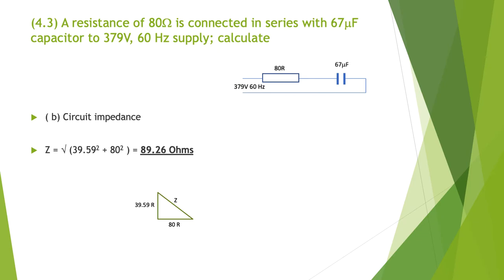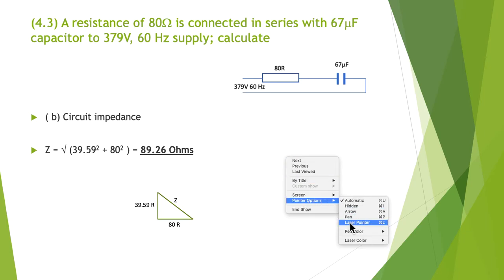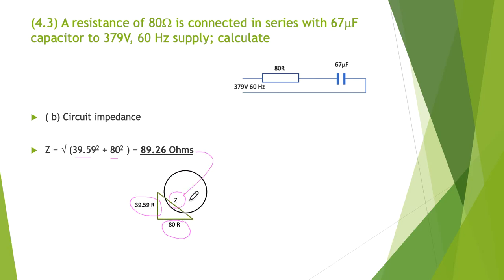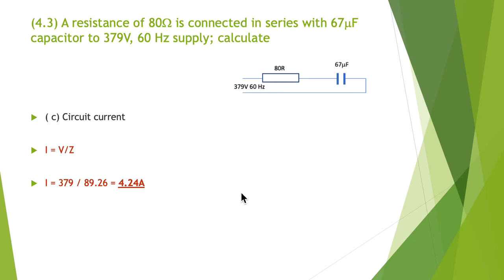B, we now want to find the circuit impedance. Again, it's just Pythagoras' theorem. We have our resistor of 80 ohms, and we've just calculated XC at 39.59. So we just need to square both, add them together, take the square root, and Z is 89.26 ohms. C, circuit current is just application of Ohm's law: I = V/Z = 379 volts divided by 89.26, giving us 4.24 amps.